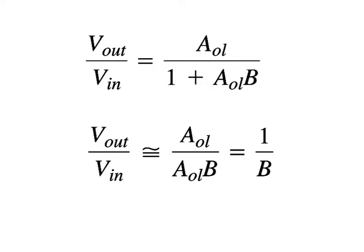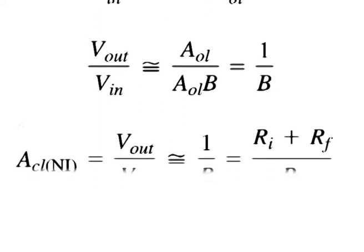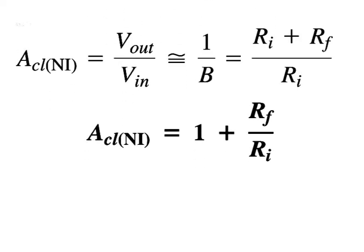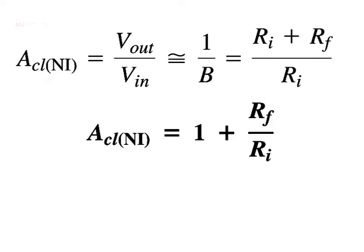The closed loop gain of the non-inverting amplifier is the reciprocal of the attenuation B of the feedback circuit, given by ACL(NI) equals Vout over Vin, approximately equal to 1 over B, which equals RI plus RF over RI. Therefore, ACL(NI) equals 1 plus RF over RI. Notice that the closed loop voltage gain is not dependent on the op-amp's open loop voltage gain under the condition that AOL times B is much greater than 1. The closed loop gain can be set by selecting values of RF and RI.